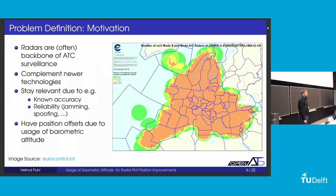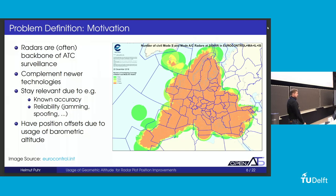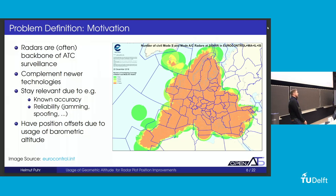Why are radars still interesting, and why is improving radar plot accuracy still of interest? As you can see in this figure from Eurocontrol, radar coverage — at least for Europe — is quite the backbone of ATC surveillance. In orange, we have the coverage of four or more radars, and some areas have coverage of more than 30 radars, suggesting a few hundred radars exist in Europe. Radars complement new technologies because they have known accuracy, are reliable, and it's a known technology — we know what to expect. They are still relevant currently.